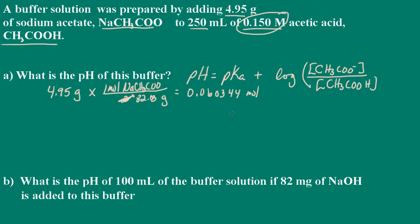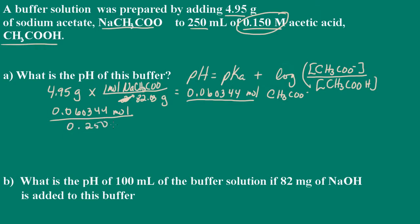Remember, if we have 0.060344 moles of sodium acetate, it's going to completely dissociate, so that means we have 0.060344 moles of acetate ion. We know the volume of the solution, so we can determine the molarity. We have 0.060344 moles of acetate ion over 250 milliliters, which is the same as 0.250 liters. That gives us a concentration of 0.241 molar for the acetate ion.